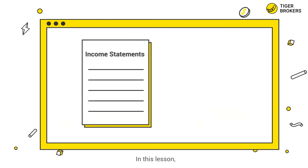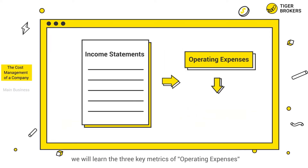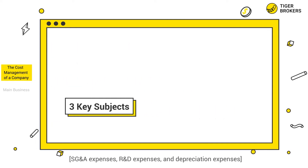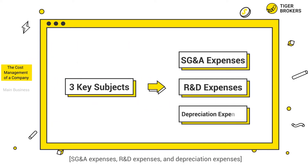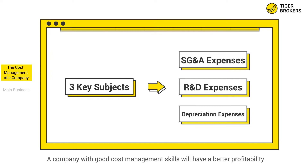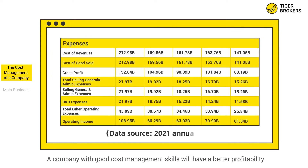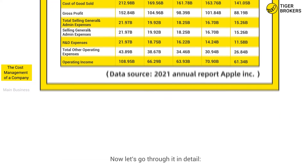In this lesson, we'll learn the three key metrics of operating expenses in the income statement: SG&A expenses, R&D expenses, and depreciation expenses. By learning these three metrics, we can assess the cost management capability of a company. A company with good cost management skills will have better profitability. Now let's go through it in detail.